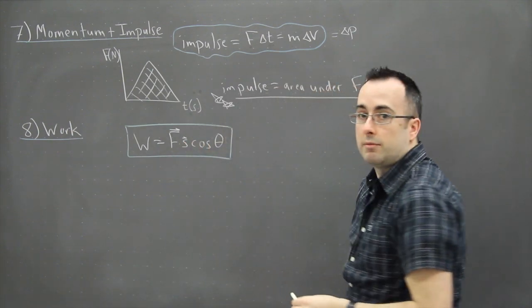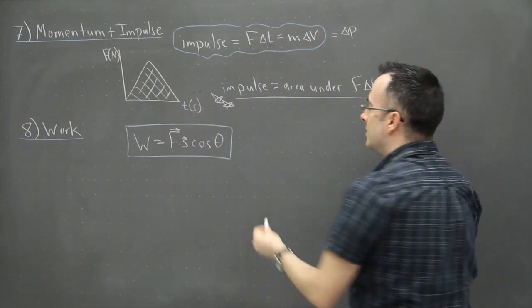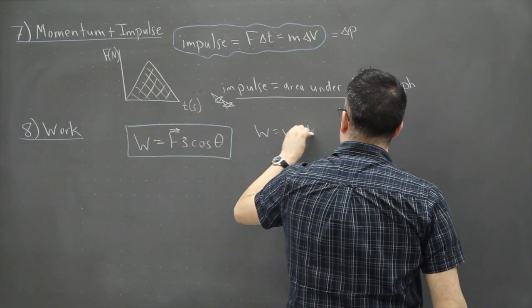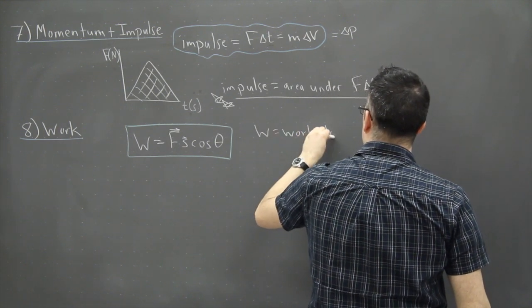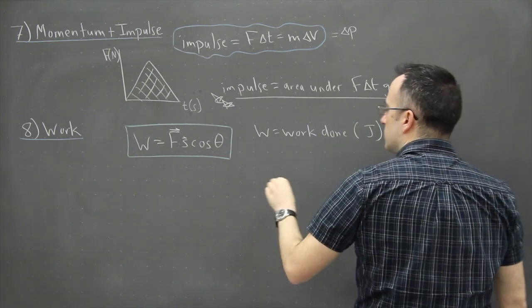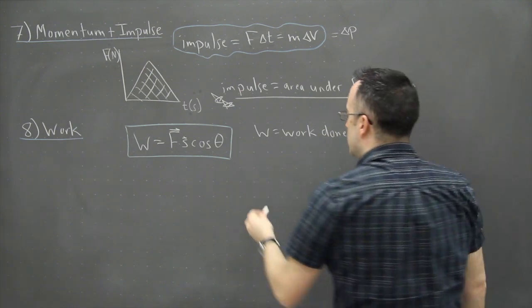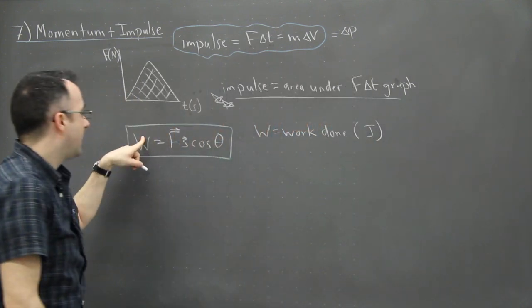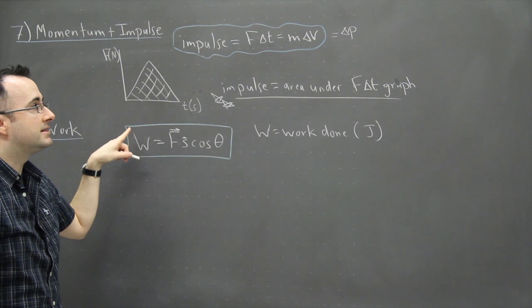I'd better define a few of the variables, it's always important to do that. We've got W, that's the work, and it's normally the work done by or to something. It's measured in joules, so it's a unit of energy, and it's a scalar. Work here doesn't have a direction, it's just a scalar.